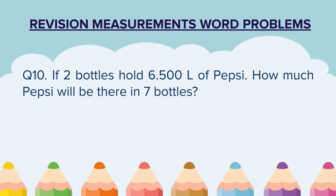Question 10. If 2 bottles hold 6.500 litres of Pepsi, how much Pepsi will be there in 7 bottles? This is a combination question. First you will have to find out how much Pepsi is in 1 bottle, and then find how much will be there in 7 bottles. This is a 2-step question — be careful and then find the answer.